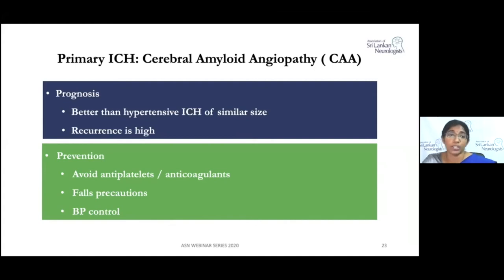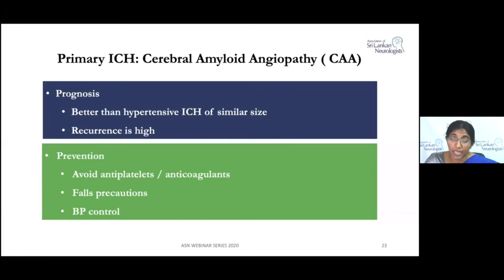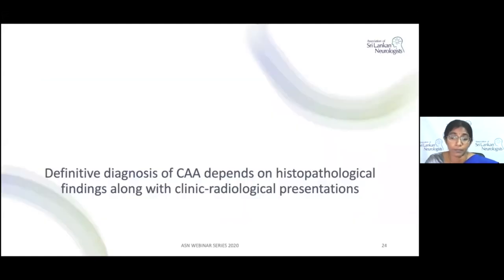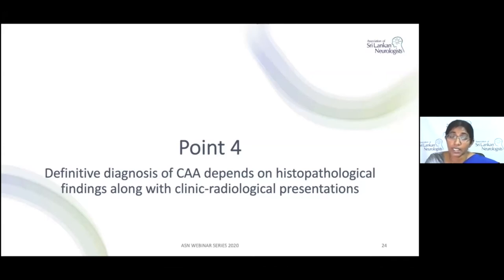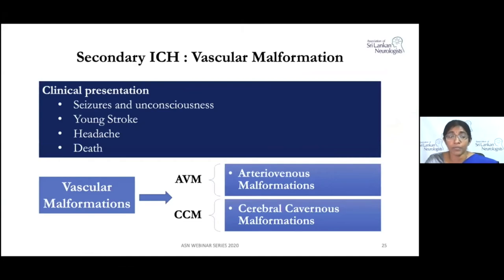The prognosis of cerebral amyloid angiopathy is generally better than hypertensive ICH, but it carries a high chance of recurrence. Preventive measures include avoiding unnecessary antiplatelet and anticoagulant administration in older patients and advising blood pressure control. The definitive diagnosis requires histopathological findings along with clinical and radiological presentation, as histological diagnosis is ideal but cannot be made in every individual.